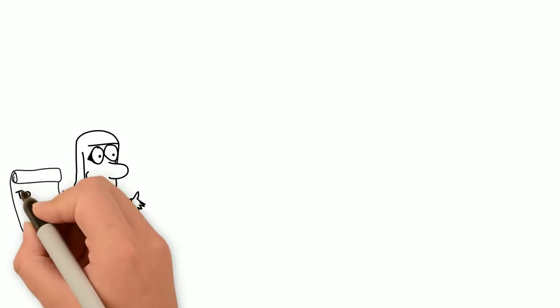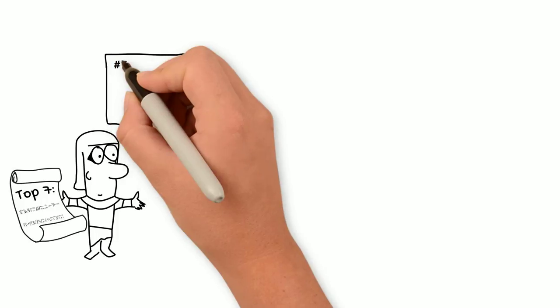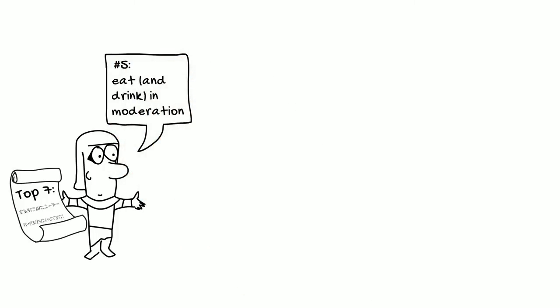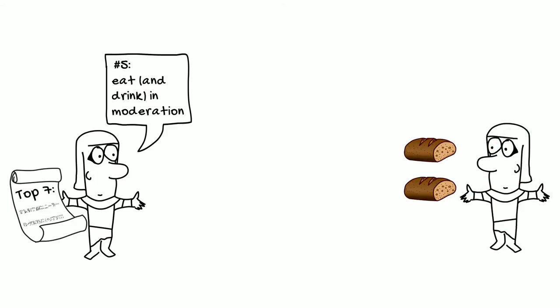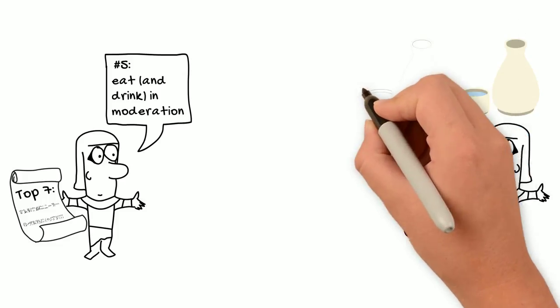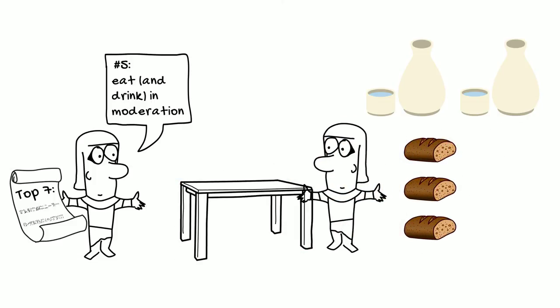The fifth of our ancient Egyptian resolutions is actually one that's among the most common in the modern Western world. That is, to practice moderation in eating and drinking, otherwise known as going on a diet. The Satire of the Trades warns: If you have eaten three loaves, drunk two jugs of beer, and the belly is not sated, restrain it. When another eats, don't stand there. Beware of rushing to the table.